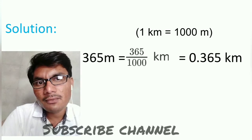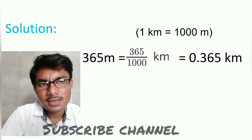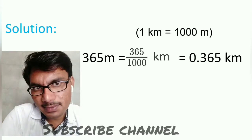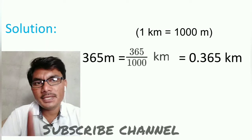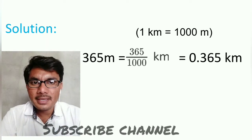To convert kilometers to meters, multiply by 1000. To convert meters to kilometers, do the reverse - divide by 1000.